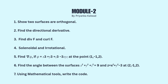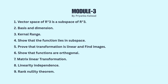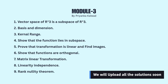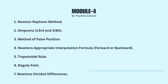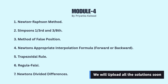Using mathematical tools, write the code — again this code is from your lab program. In Module 3: First, vector space of R³ as a subspace of R³ — questions based on this. Second, basis and dimension. Third, kernel and range. Fourth, show that the function lies in subspace. Fifth, prove that the transformation is linear and find images. Sixth, show that the functions are orthogonal. Seventh, matrix linear transformation. Eighth, linear independence. Ninth, rank-nullity theorem.